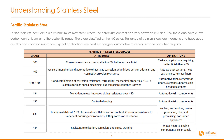Ferritic stainless steels are plain chromium stainless steels where the chromium content can vary between 12 and 18%. These also have a low carbon content similar to the austenitic range. They are classified as the 400 series. This range of stainless steels are magnetic and have good ductility and corrosion resistance.